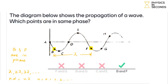And if the distance is in terms of lambda by 2 — lambda by 2, 3 lambda by 2, 5 lambda by 2 — that is half a wave, one and a half waves — then the points are out of phase. So which points are in phase? Points B and F, where the distance between them equals lambda.